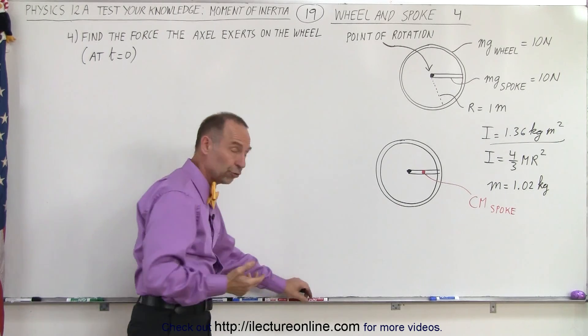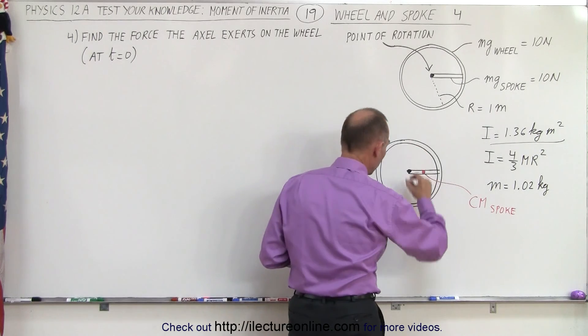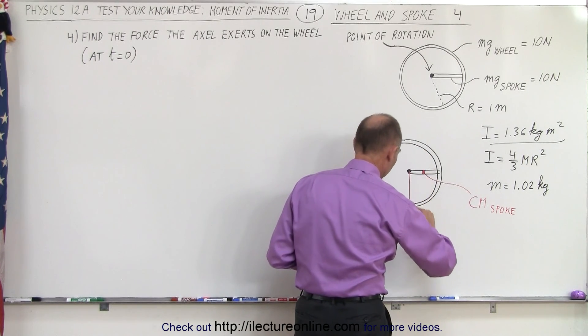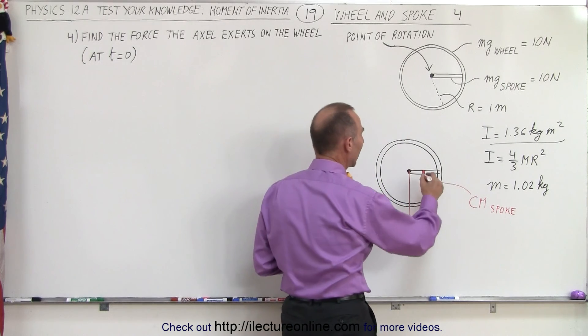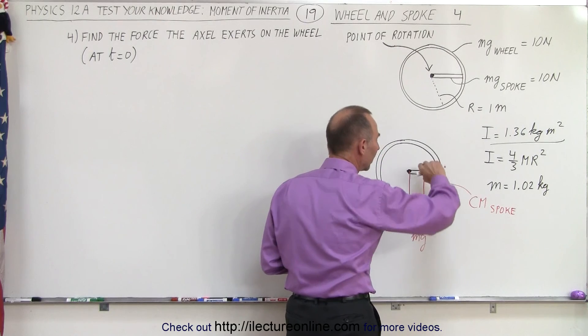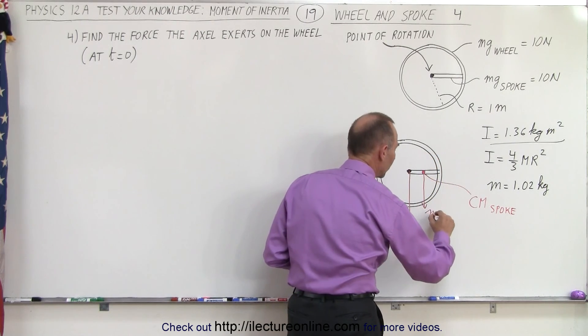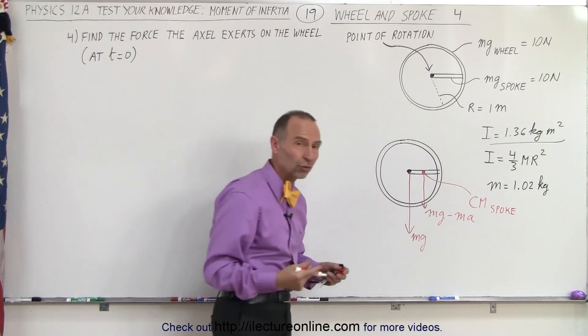Well, it turns out the best thing to do would be to draw the forces involved. So we have the weight of the wheel pulling down like this, so this would be mg of the wheel, and we have the mg of the spoke, but the spoke is accelerating downward, so actually this becomes mg minus ma, kind of like the tension on the string.